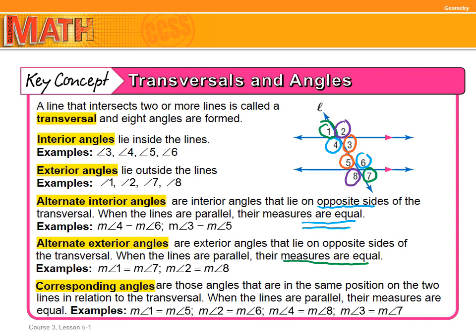Corresponding angles are those angles that are in the same position on the two lines in relation to the transversal. When the lines are parallel, their measures are equal. The measurement of angle one equals angle five, angle two equals angle six, angle four equals angle eight, and angle three equals angle seven. Make sure you get the differences between interior, exterior, alternate interior, alternate exterior, and corresponding angles — it's a tedious process but it can be done.